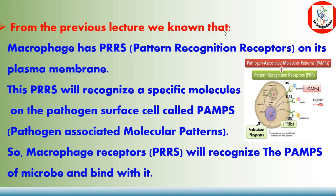From the previous picture, we know that this macrophage has PRRs — pattern recognition receptors — on its plasma membrane, like this picture showing pattern recognition receptor TLR. These PRRs will recognize a specific molecule on the pathogen surface called PAMPs — pathogen-associated molecular patterns — like these PAMPs on the antigen surface. So, the macrophage receptor PRRs will recognize the PAMPs of microbes and bind with it. This is the first step in the phagocytosis process.